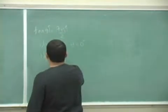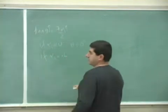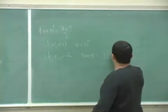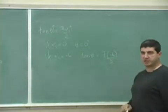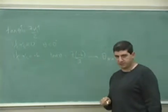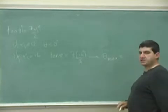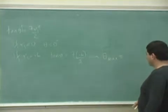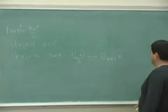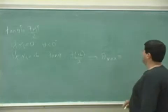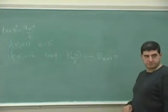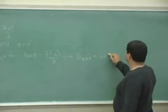So if mu s equals 0.6, as given in the problem, then tangent of theta is going to be seven times 0.6 divided by two. Then you take the inverse tangent of that. This is theta max — the maximum angle that you can tilt that surface and still have pure rolling motion. That gives 64.5 degrees.